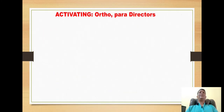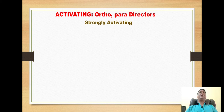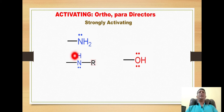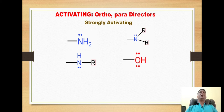The first class is the activating groups which are ortho-para directors. These groups activate the aromatic ring towards the electrophilic substitution reaction. Examples include the amino group, the hydroxy group, the alkylamino group, and the dialkylamino group. These represent the strongly activating ortho-para directing groups.